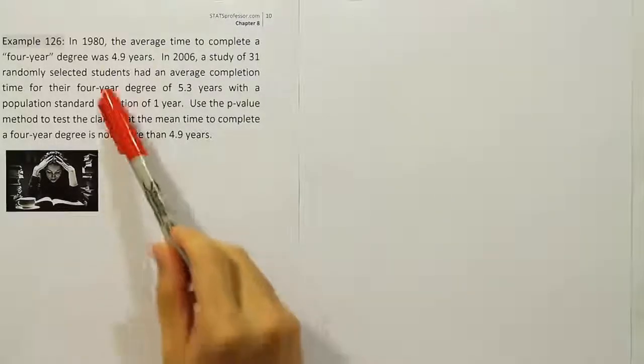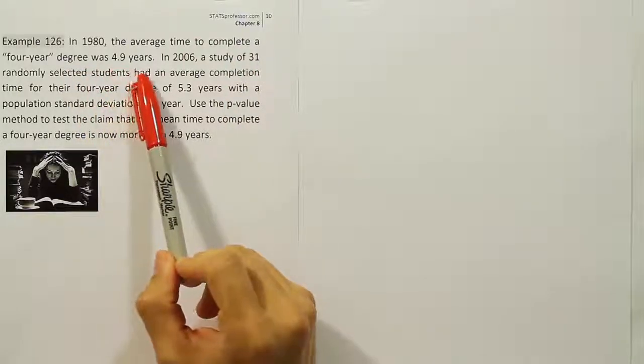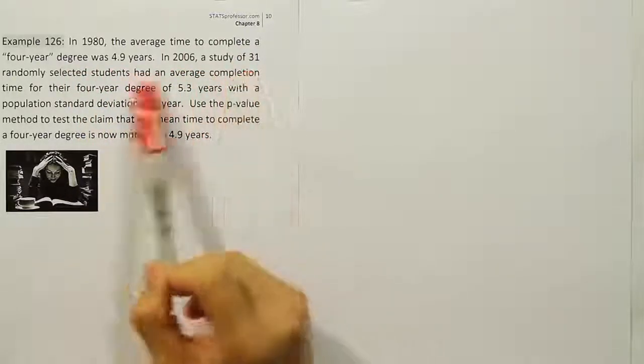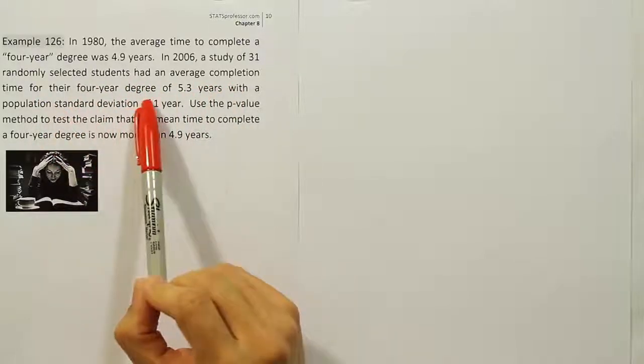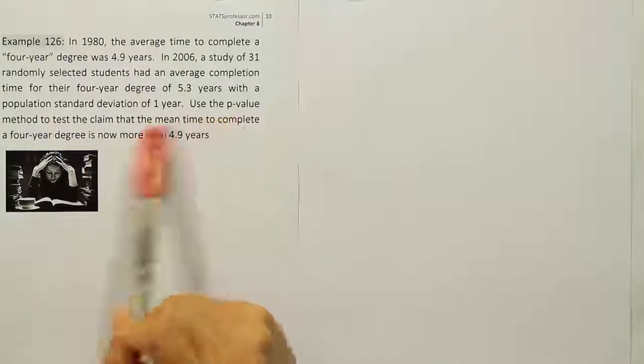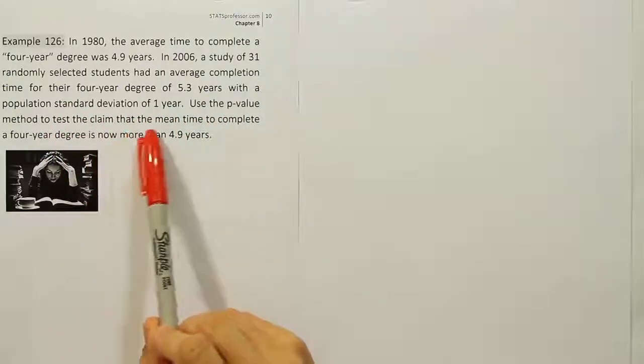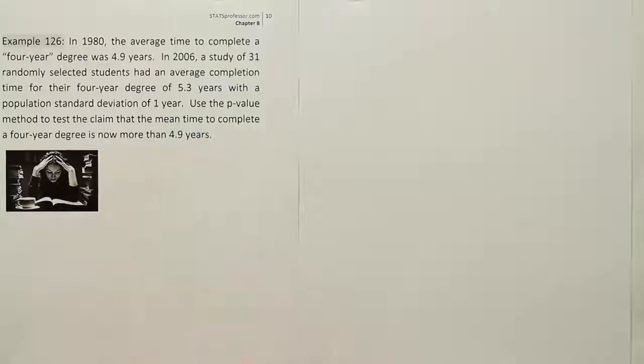Example 126. In 1980, the average time to complete a four-year degree was 4.9 years. In 2006, a study of 31 randomly selected students had an average completion time for their four-year degree of 5.3 years with a population standard deviation of one year. Use the p-value method to test the claim that the mean time to complete a four-year degree is now more than 4.9 years.